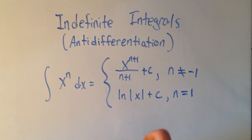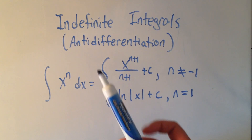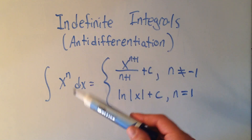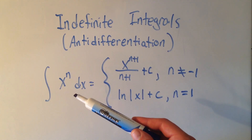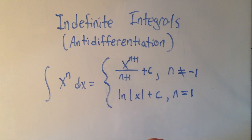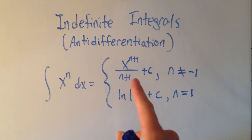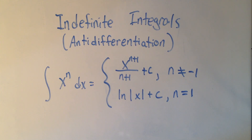So, if you took the derivative of, for instance, x squared, the derivative would be 2x. And if you took the anti-derivative of 2x, you would get x squared. And that's the whole idea of indefinite integrals.